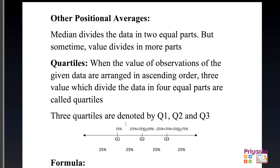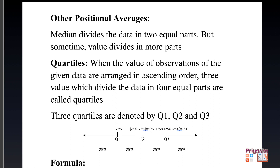It is important to learn these percentages: Q1 gives 25%, Q2 gives 25+25 = 50% which equals the median, and Q3 gives 25+25+25 = 75%. Q2 is at the center of 100% — just like median — so Q2 equals the median. If a question asks for Q3, it means you are finding the 75th percentile.